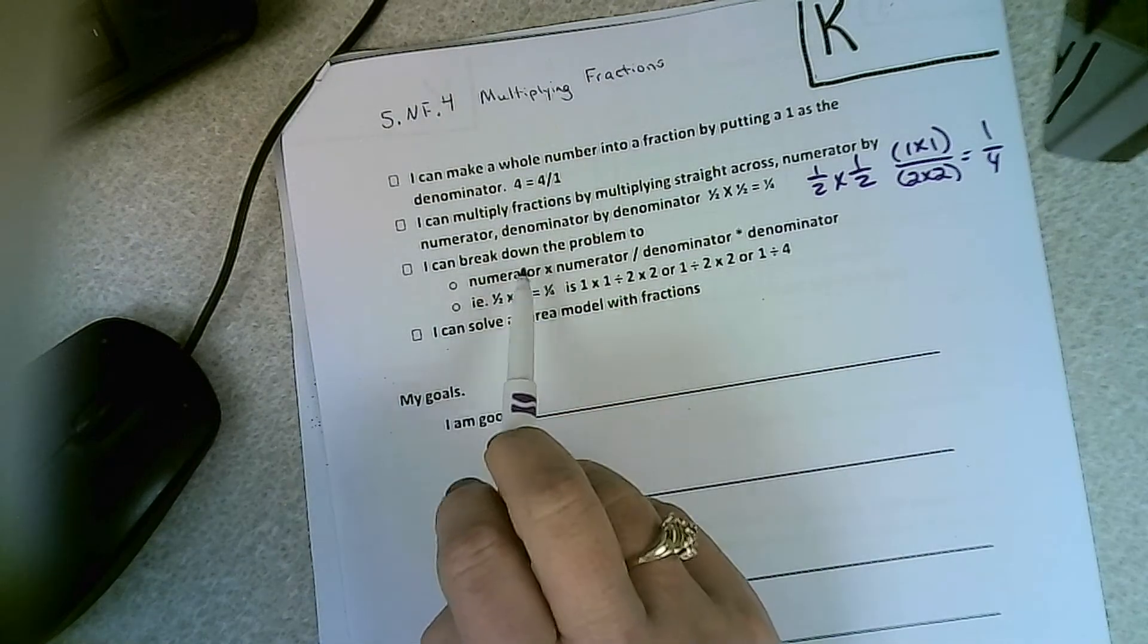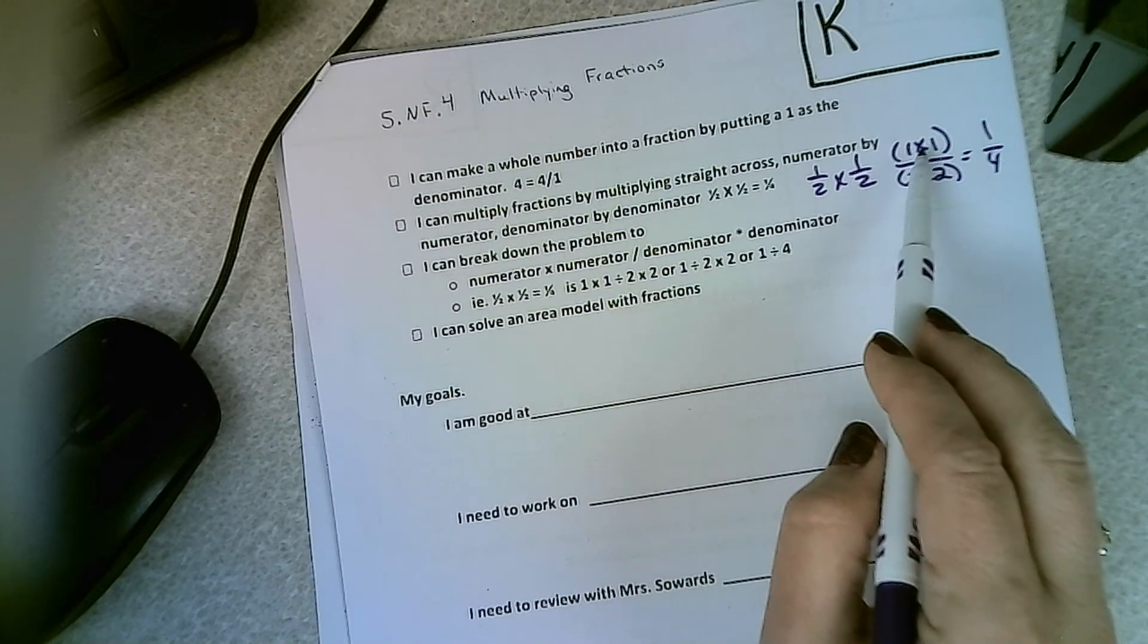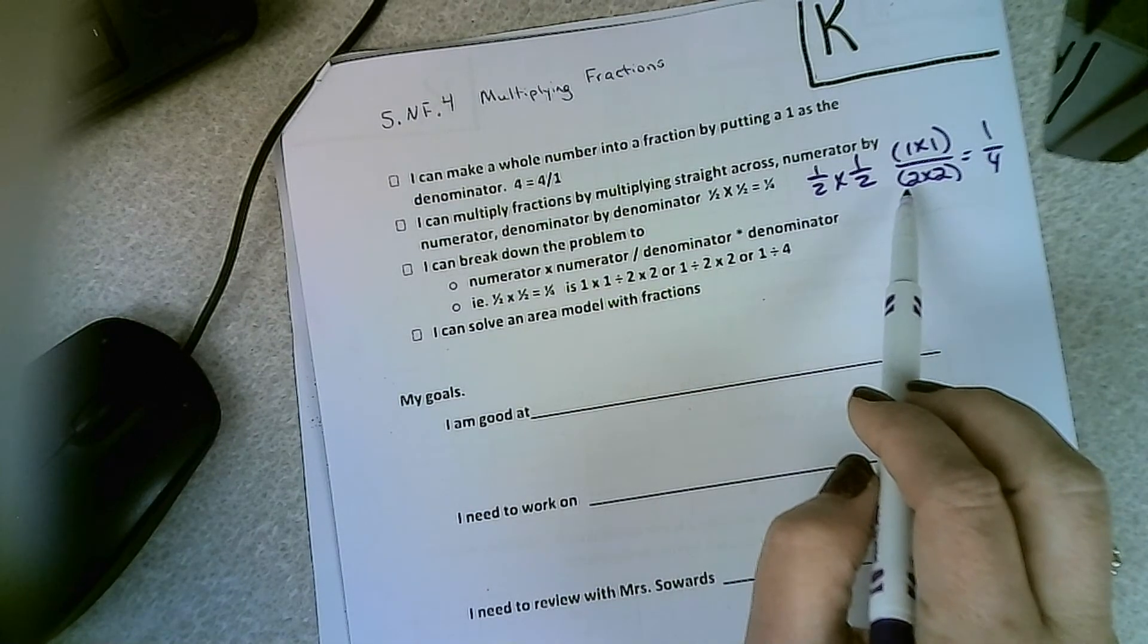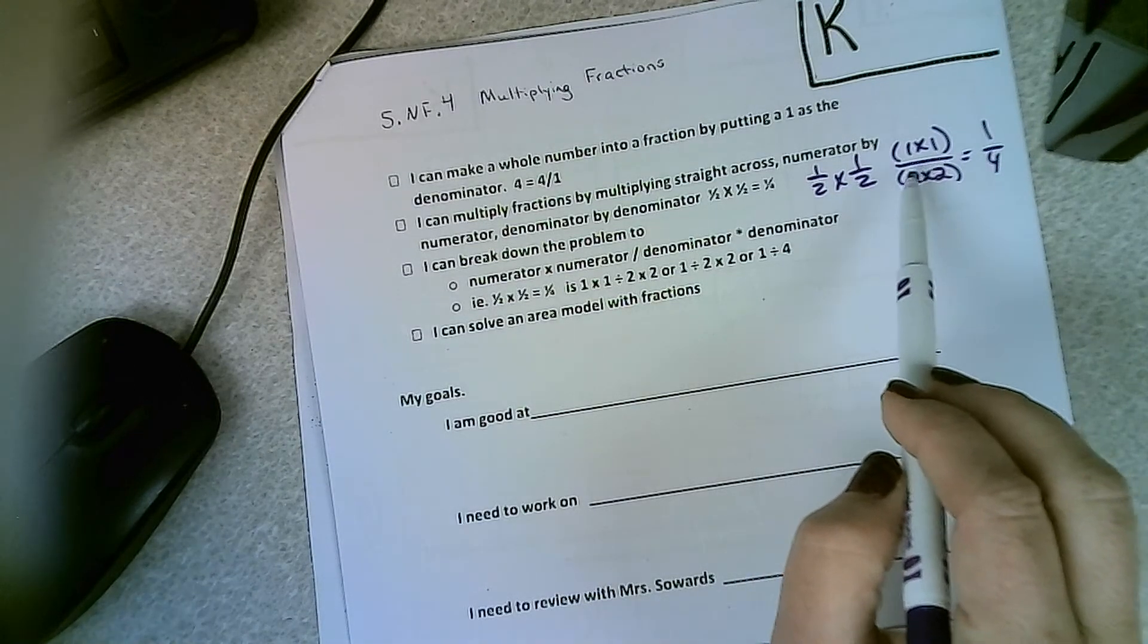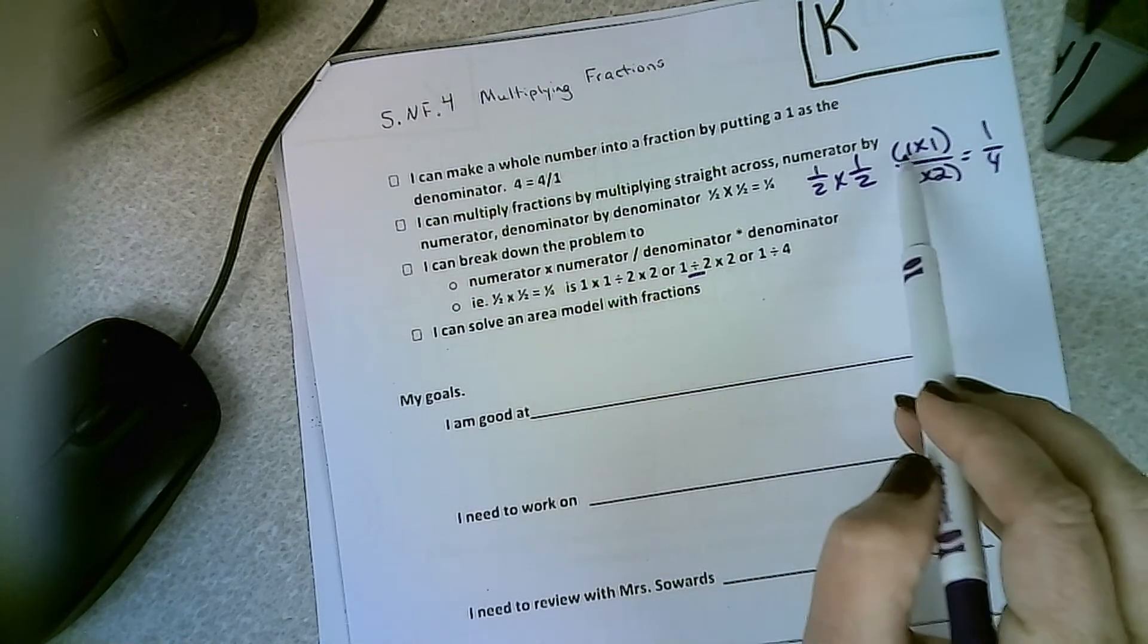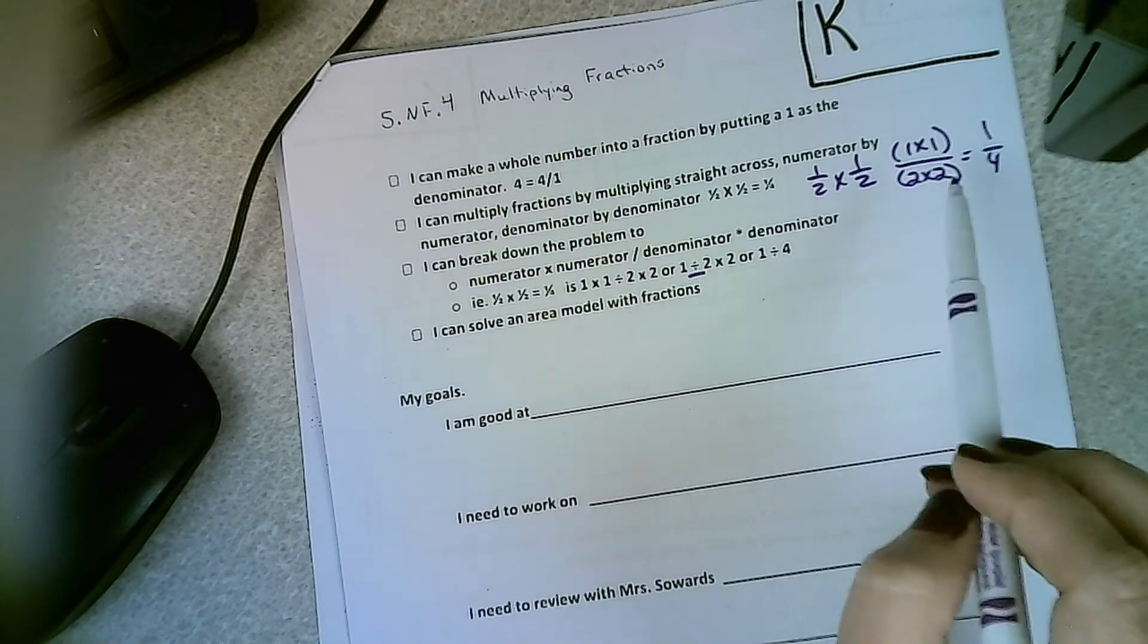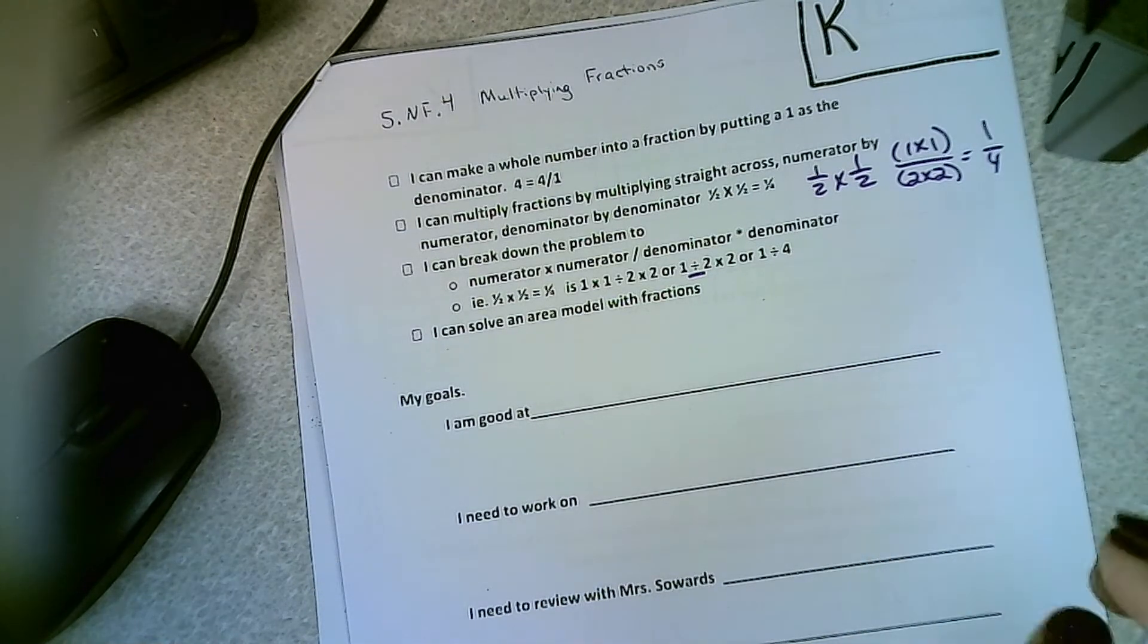Then I can bring down the problem to numerator times numerator divided by denominator times denominator. Because remember, we already talked about that fraction line is the same thing as the division sign, right? So it's 1 times 1 divided by 2 times 2. And so technically, it's 1 divided by 4.